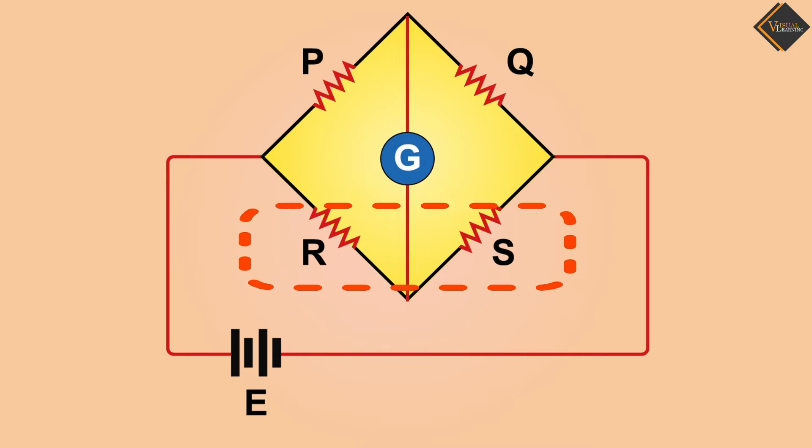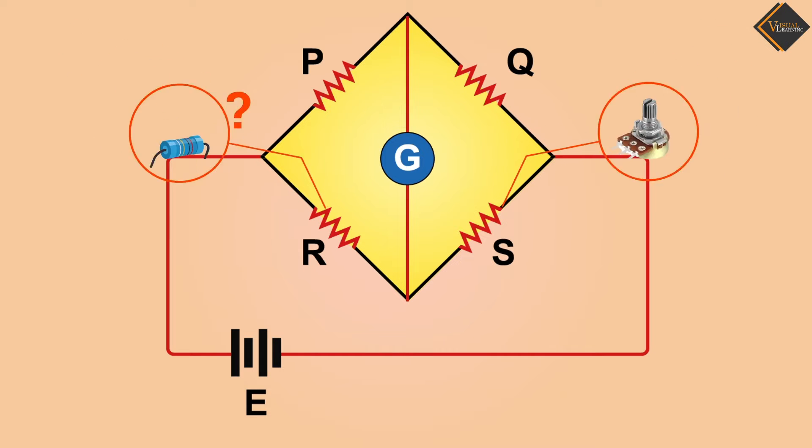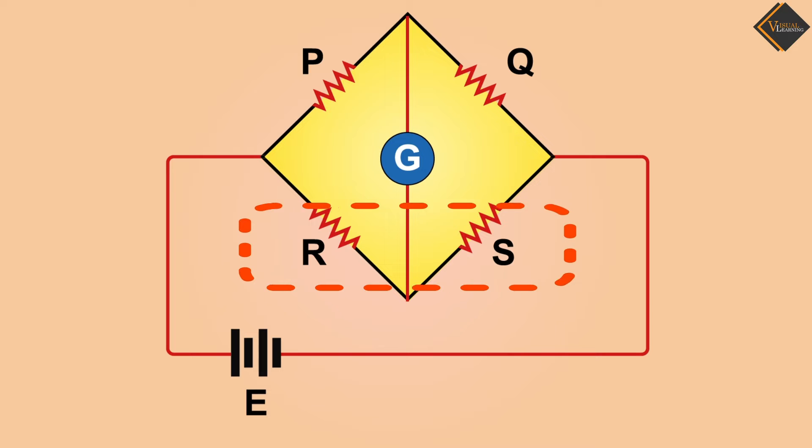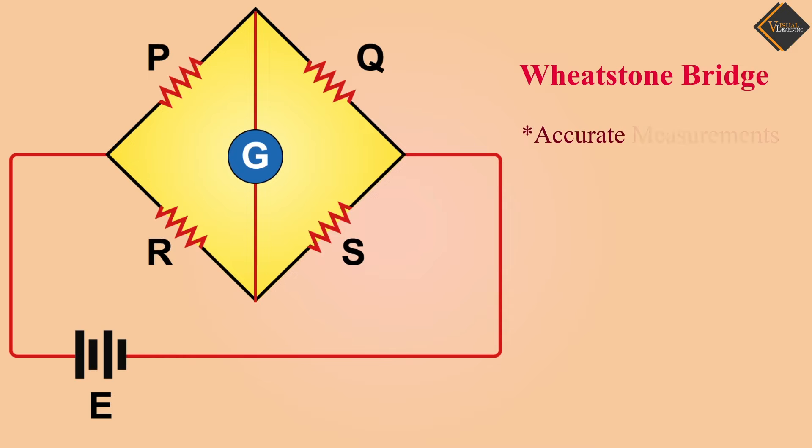The Wheatstone Bridge circuit compares two resistors, one being an unknown resistor and the other a variable resistor. These two resistors are connected in the form of a bridge. Wheatstone Bridge provides accurate measurements making it highly reliable.